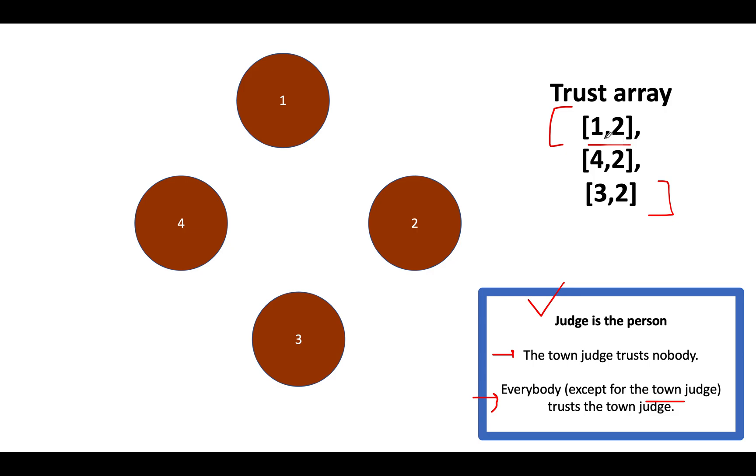The first element is 1, 2. That simply means that the first person trusts the second person. We'll create an edge starting from 1 ending at 2. Next, we have 4, 2. We'll simply represent this by creating a new edge starting from the fourth index up till the second index. Next, we have 3, 2. We'll create a new edge starting from the third index and ending at the second index.